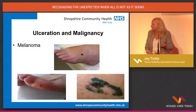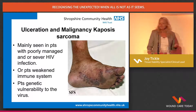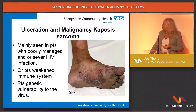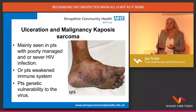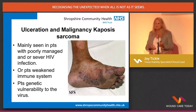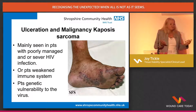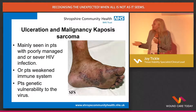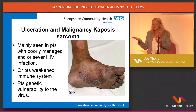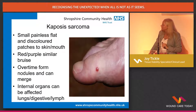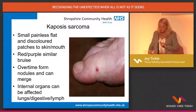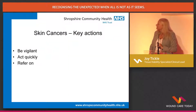Melanomas we need to be aware of. Any lesions that suddenly develop or have developed or changed, always be suspicious of. Kaposi's sarcoma is a form of cancer and can be seen in patients with severe HIV or a generally weakened immune system. Would you think that was anything harmful? When examining your patient — even if they've got a lower limb ulcer — look at the toes, look between the toes. Our eyes, our hands and our minds are our best tools. Be vigilant, act quickly and refer on.